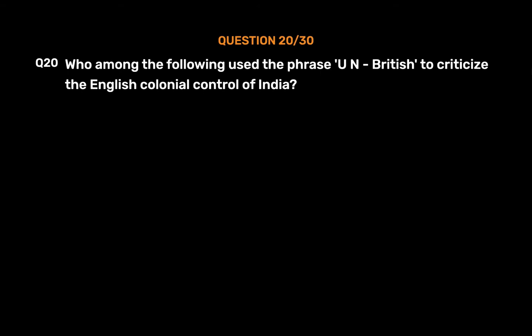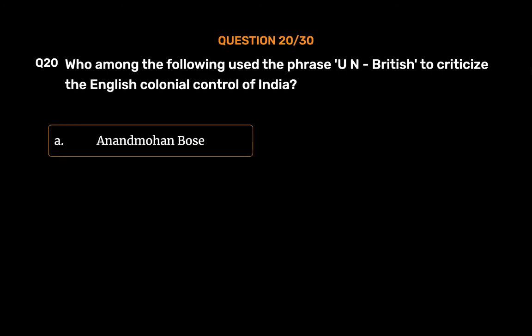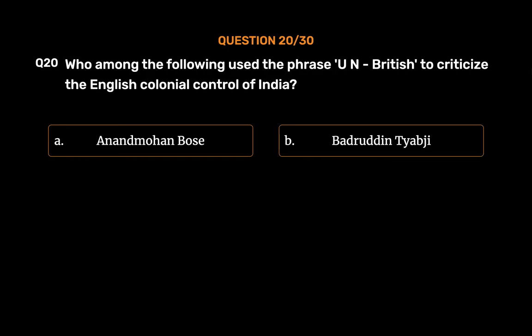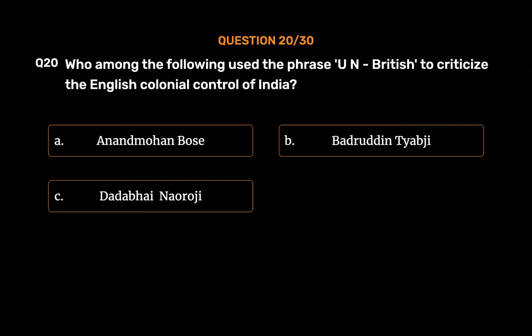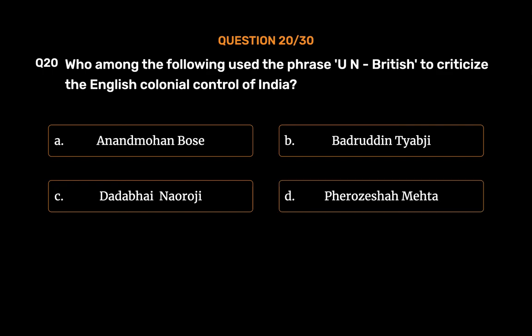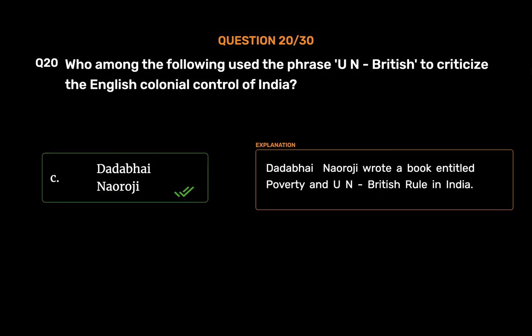Question No. 20. Who among the following used the phrase 'Un-British' to criticize the English colonial control of India? Option A, Anand Mohan Bose; Option B, Badruddin Tyabji; Option C, Dada Bhai Naoroji; Option D, Pherozeshah Mehta. The correct answer is Option C, Dada Bhai Naoroji. Dada Bhai Naoroji wrote a book entitled 'Poverty and Un-British Rule in India.'